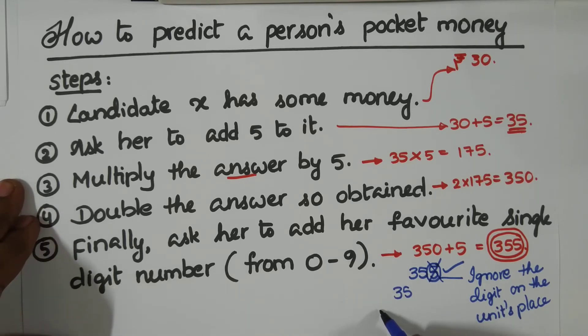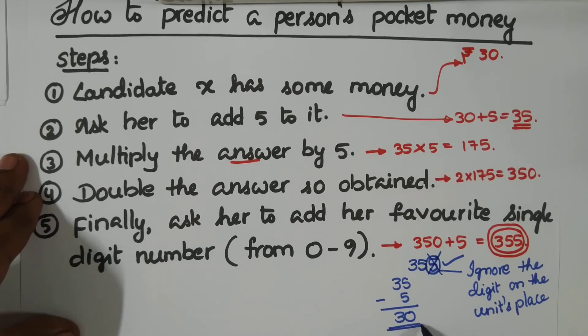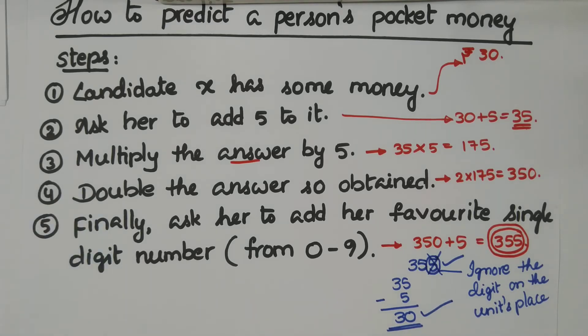Now from this remaining number, subtract five. If you subtract five, you will have 30. That means that person is having 30 rupees in his pocket. It's simple.